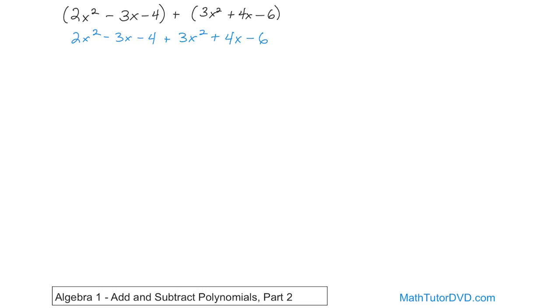But here we have an x squared, and here we have another 3x squared, or I should say 2x squared and 3x squared. So these are actually like terms because x squared exactly matches another x squared there.